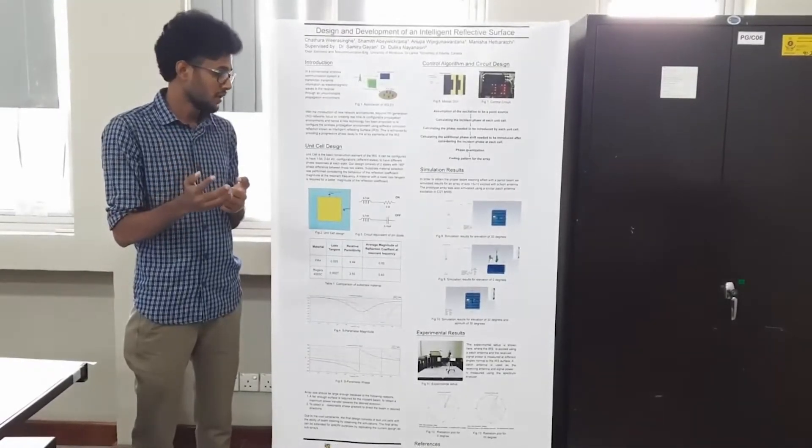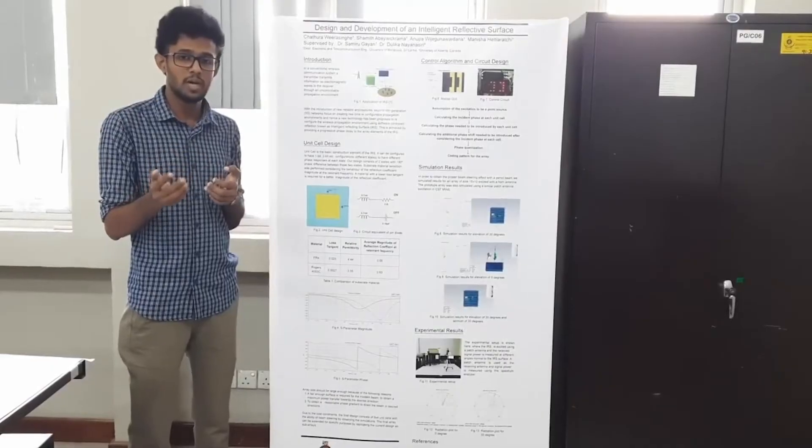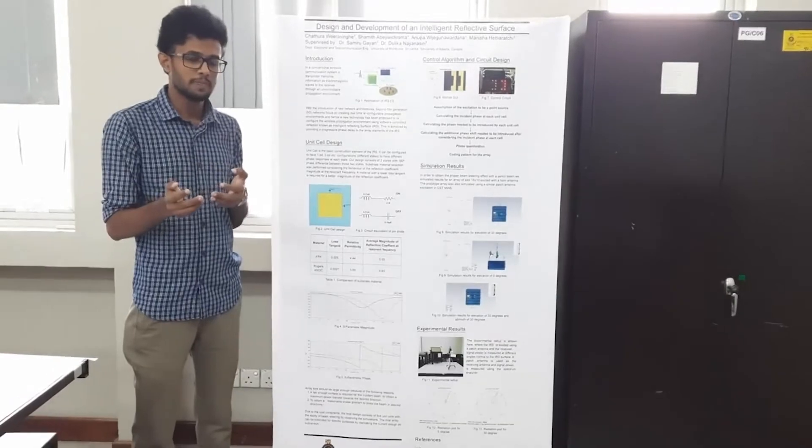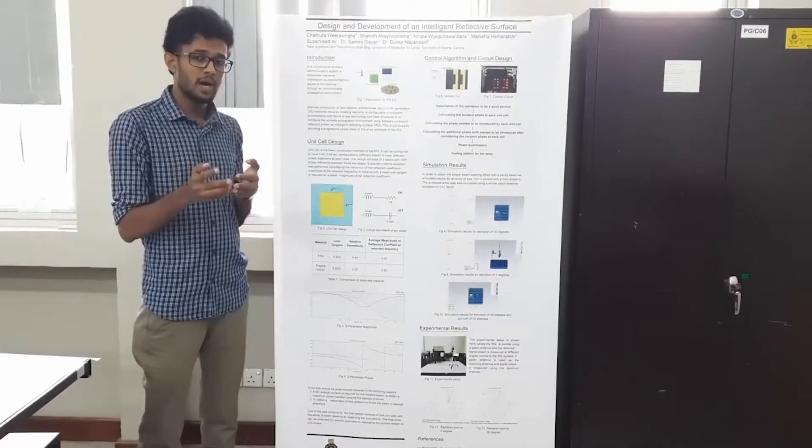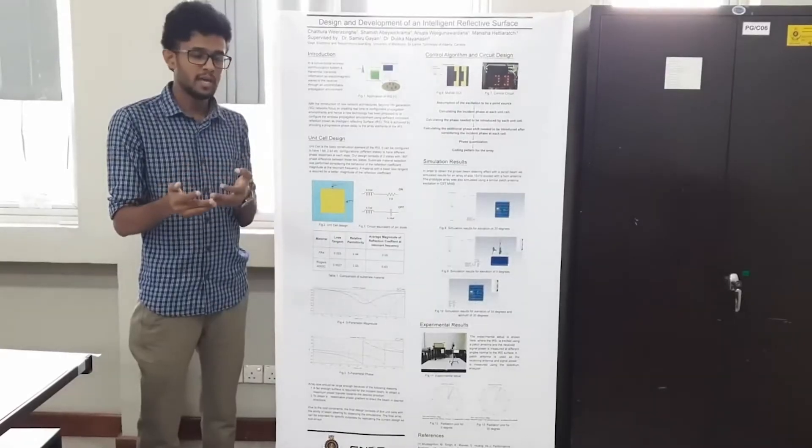As mentioned in the first half, in our unit cell, it has only two states which are related to the on and off states of the diode. So it is a binary response. In order to have the binary response, we have to quantize the phase values which we obtained earlier, then we make them binary.